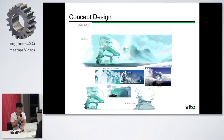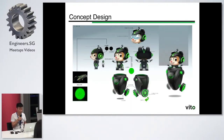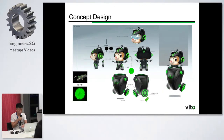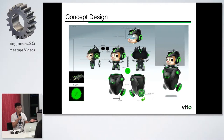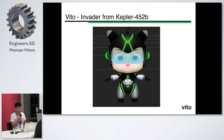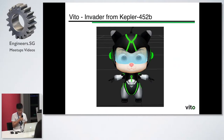This is the environment concept design, and this is our character — he's called Vito. We drew this set from a normal game development perspective. We invented a flying machine and used some elements from The Matrix. This is the 3D model. Vito is an invader from Kepler 452b, which is another planet, and there's a story behind it.